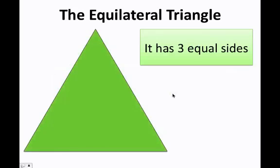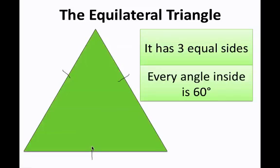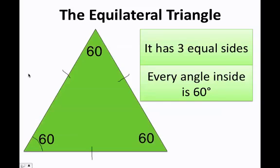The equilateral triangle. First, let's remember the equilateral triangle has three equal sides, so all three sides must be equal to each other. Also, every angle inside is 60 degrees. Remember, the sum of the angles inside a triangle will always be 180, therefore each angle is 60 degrees, because 60 plus 60 plus 60 is 180.